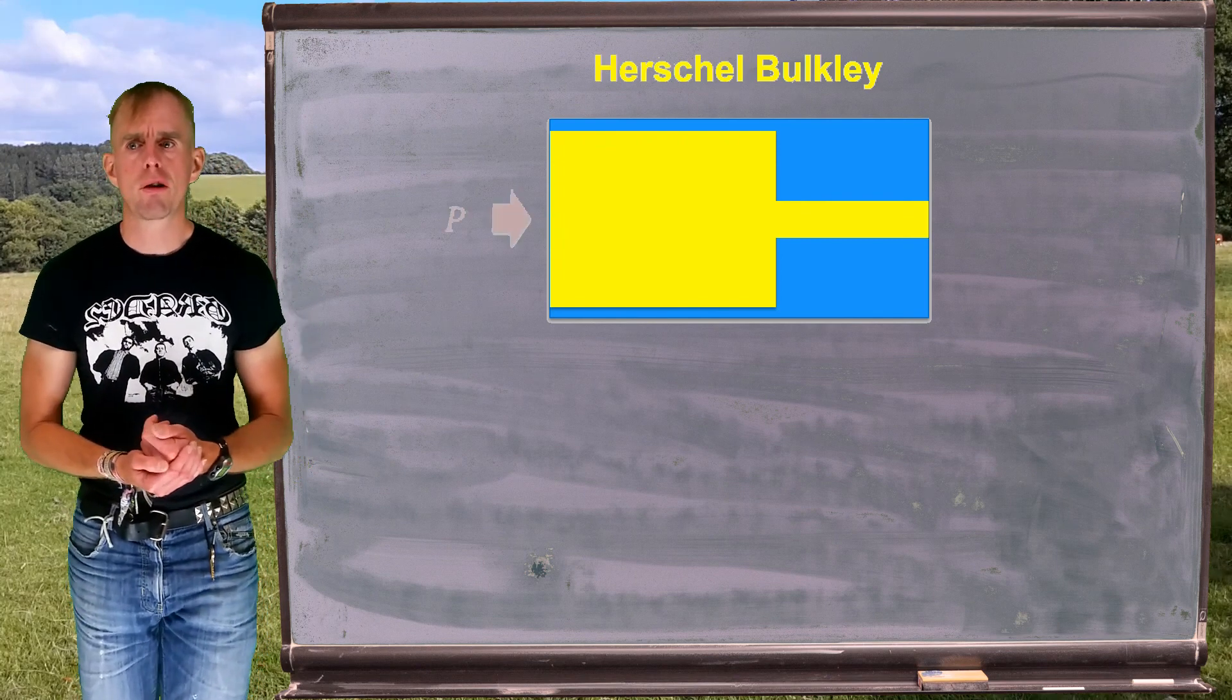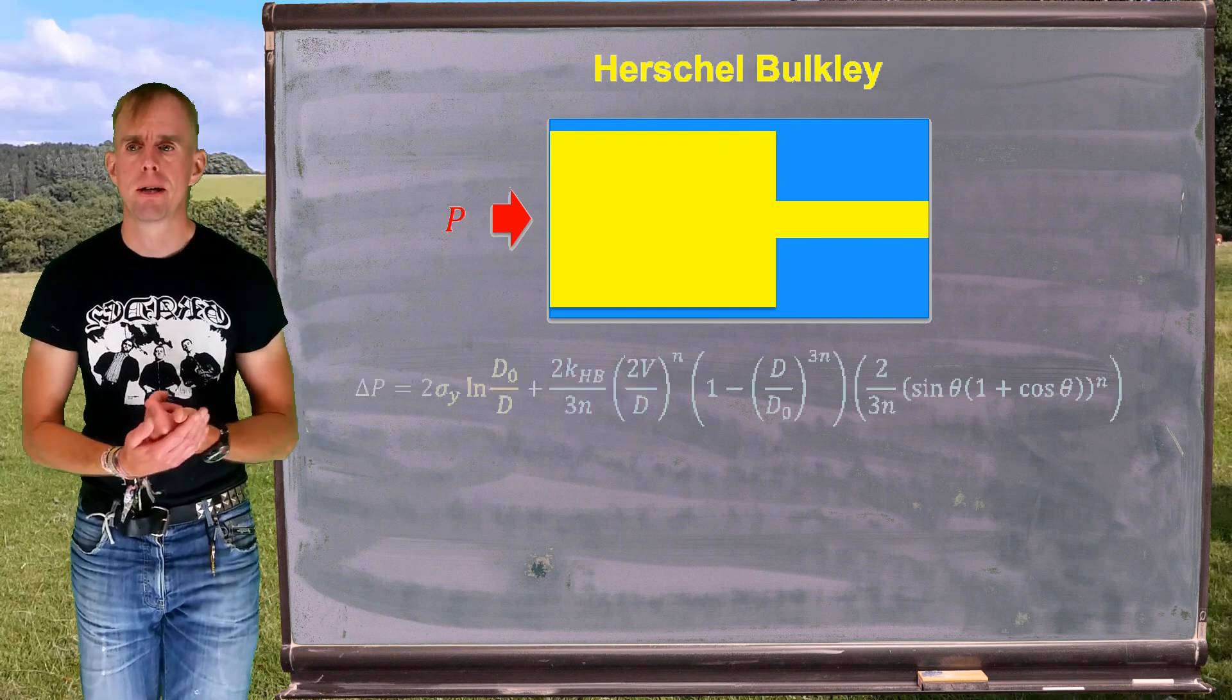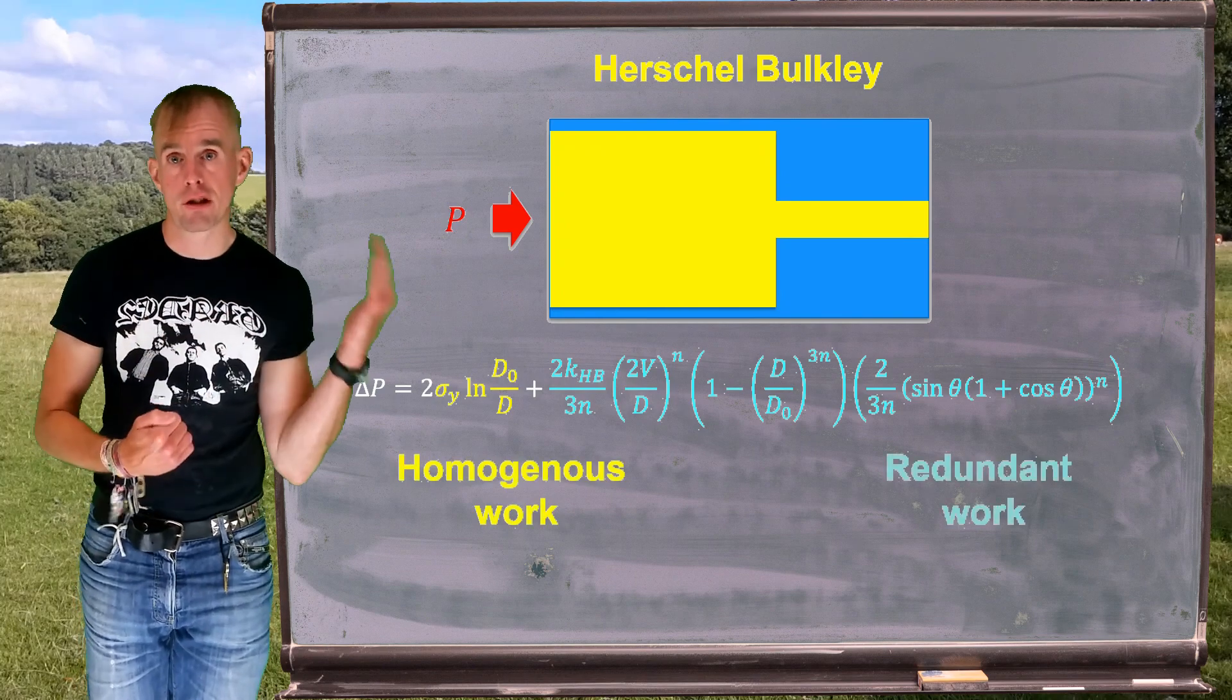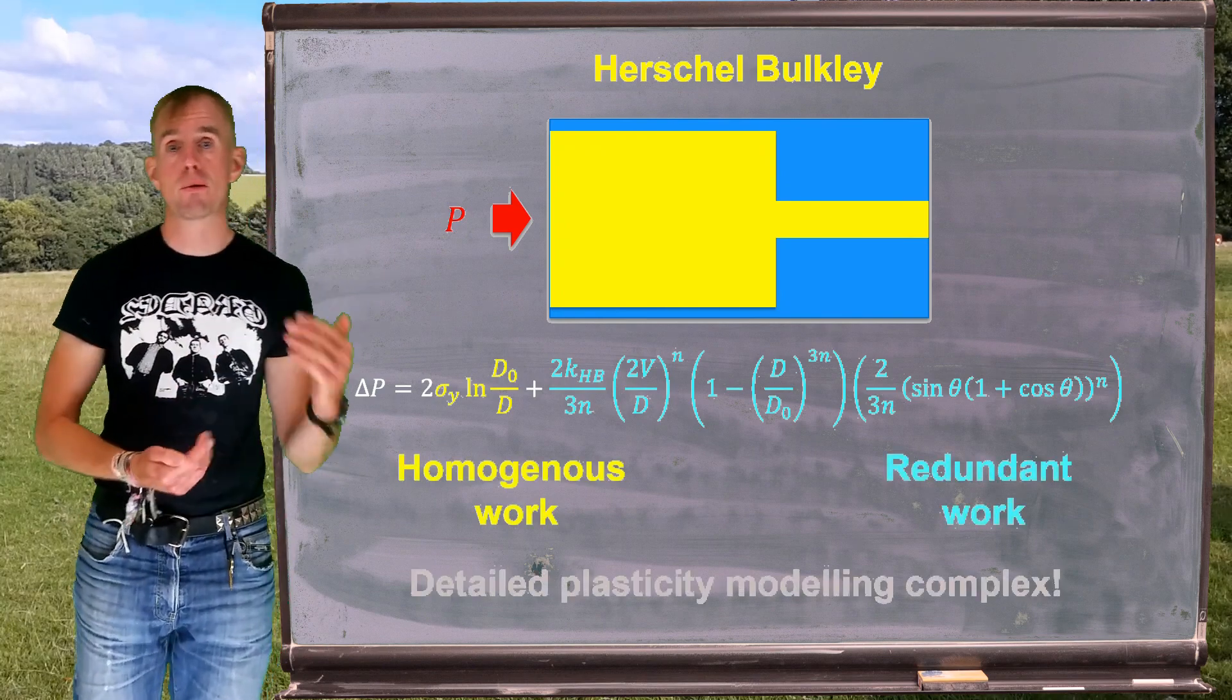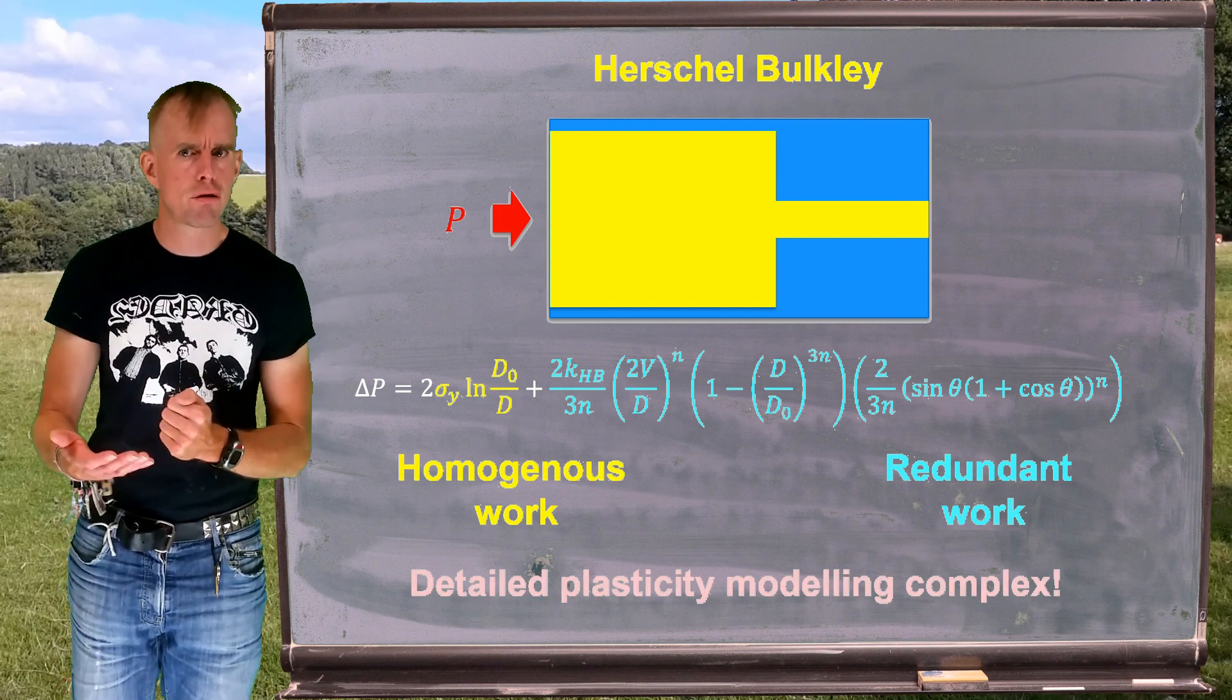Now, lots of assumptions were made in the result that I'm just about to show you. For example, it is assumed, first of all, that there is no shear in this system. It assumes, therefore, there is full slip at all the walls, which we know experimentally isn't necessarily true at all.